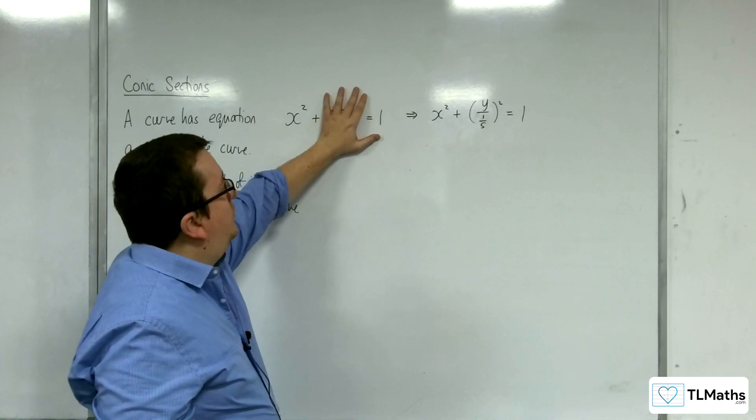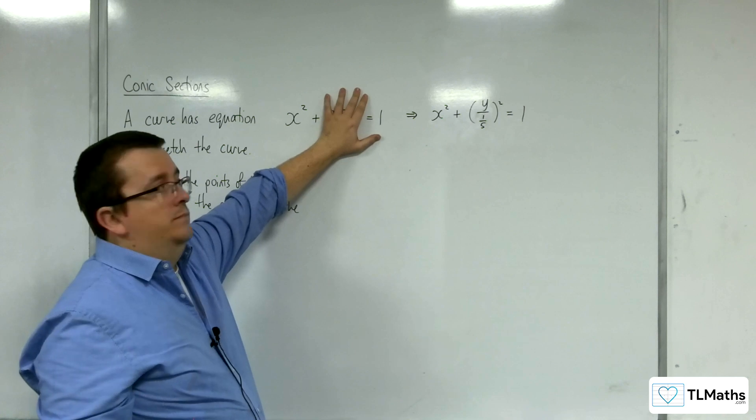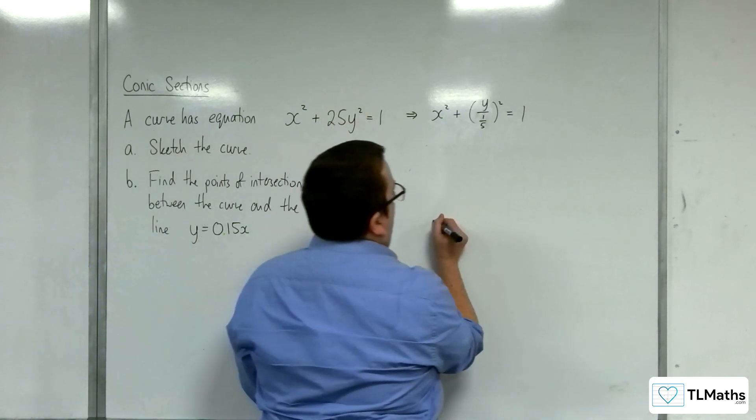And when y is 0, x squared equals 1, so x is plus or minus 1. So there are a few different ways of doing it.